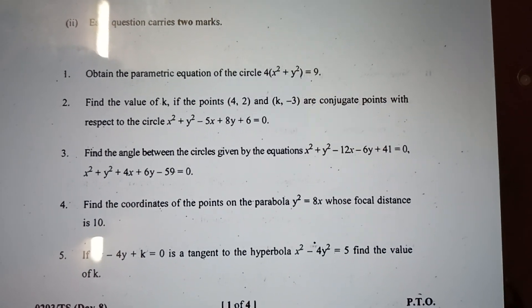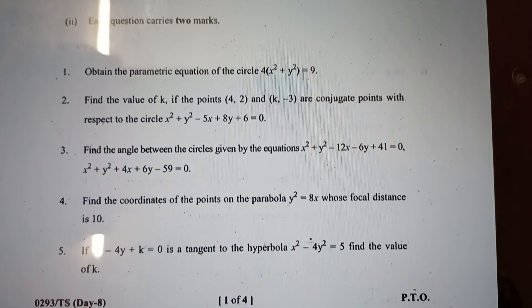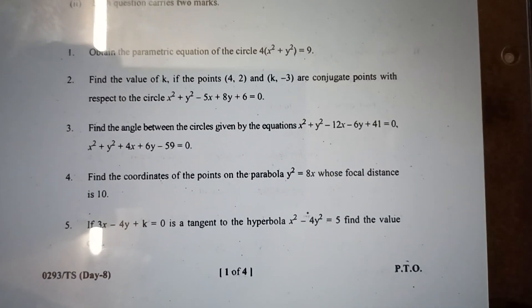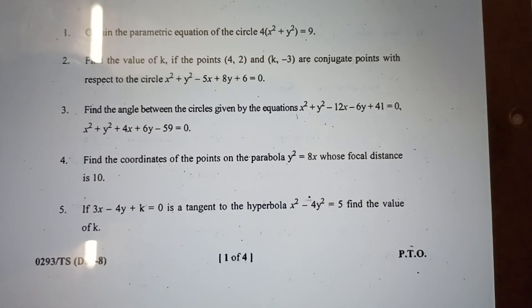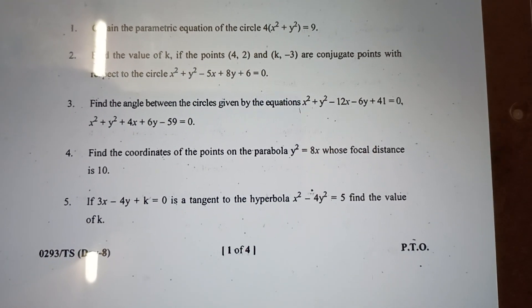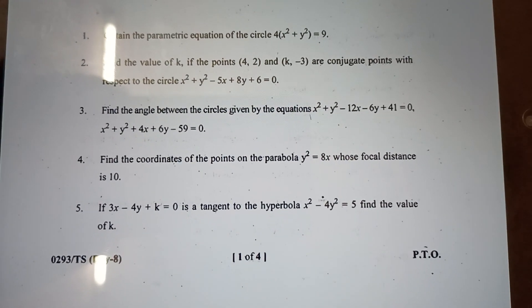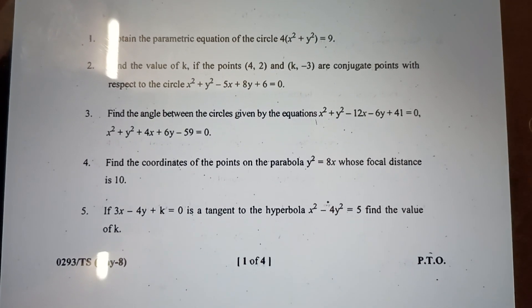Find the angle between the circles given by the equations. Find the coordinates of the points on the parabola y² = 8x whose focal distance is 10. If 3x - 4y + k = 0 is tangent to the hyperbola, find the value of k.